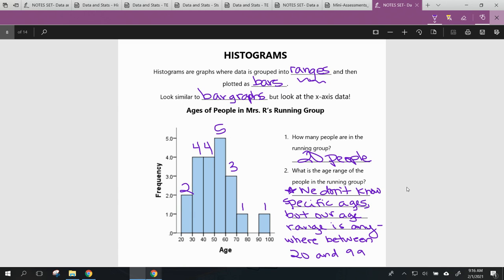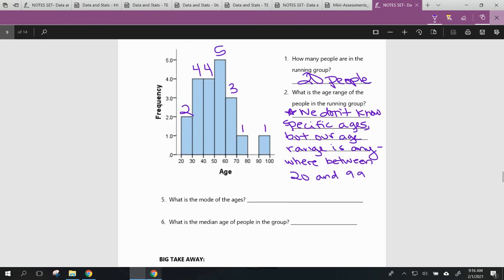We can't say 100. If there was someone that was in their hundreds, we would have this other block over here. And since we don't have that, that means the oldest anyone could possibly be according to this graph would be 99 years old.